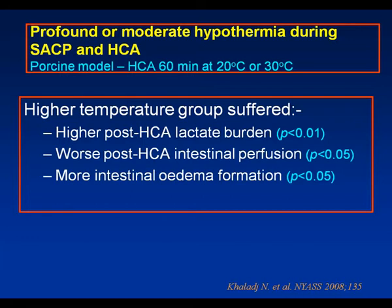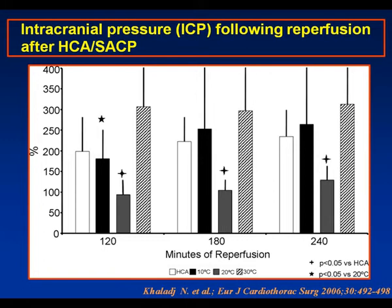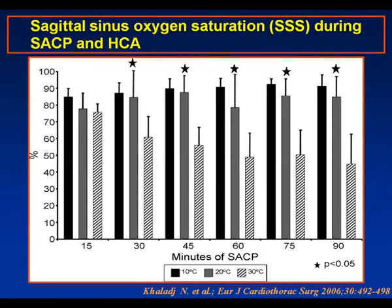Another reason why higher temperatures may be disadvantageous is their apparent effect on intracranial pressure. Comparing three temperatures of SACP — 10, 20, and 30 degrees centigrade — the 30-degree group each had a much more profound increase in intracranial pressure, which may be profoundly important in the generation of transient neurological deficits. This increase in intracranial pressure persisted for four hours following surgery. There was also a fall in sagittal sinus oxygen saturation comparing 20-degree, 10-degree, and 30-degree SACP, which again may be disadvantageous.